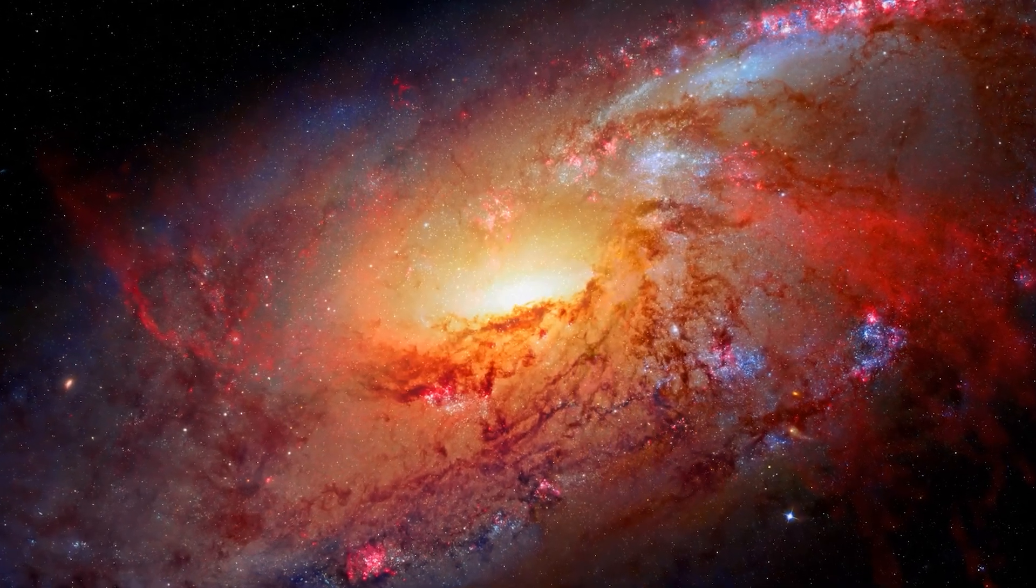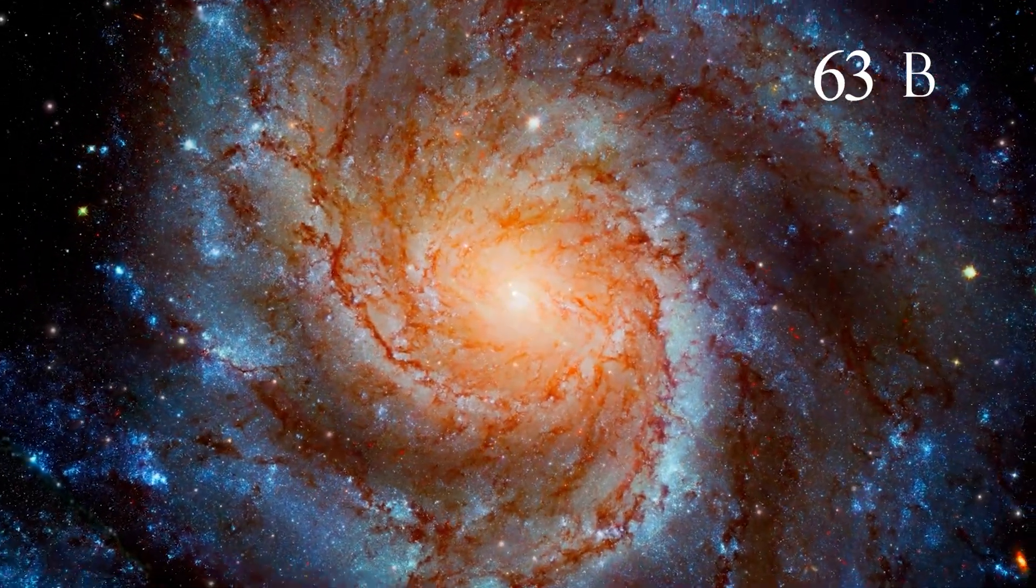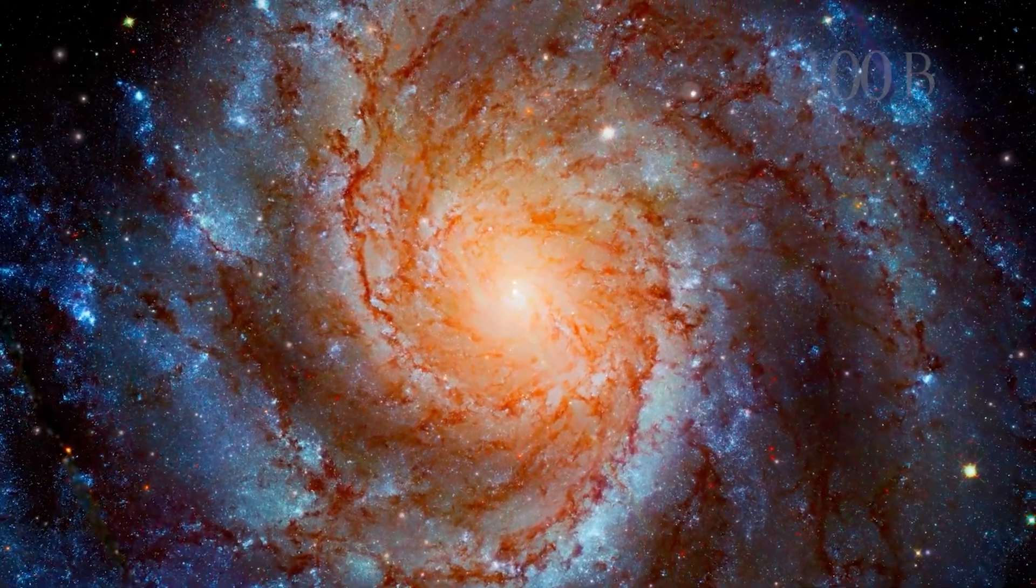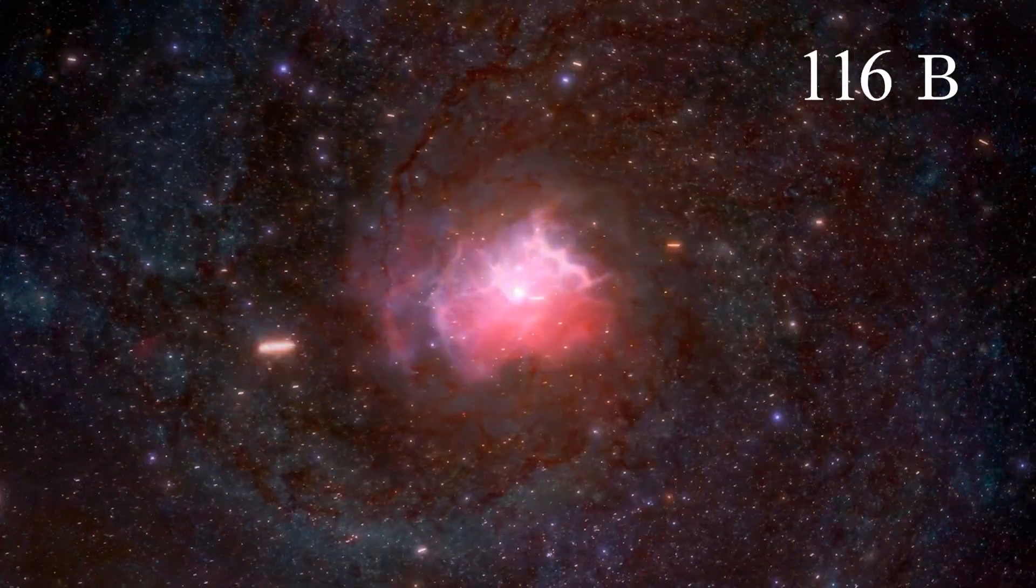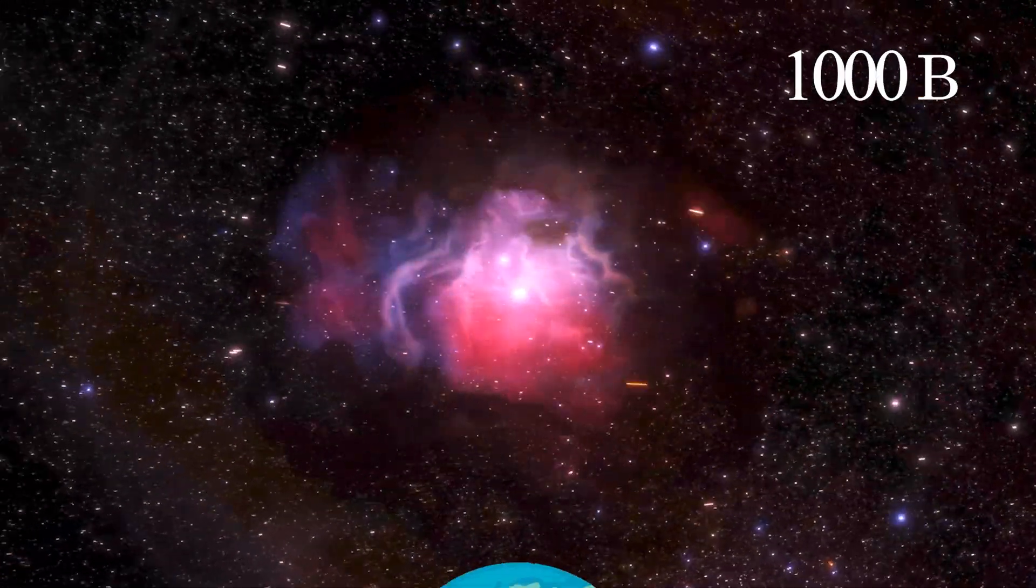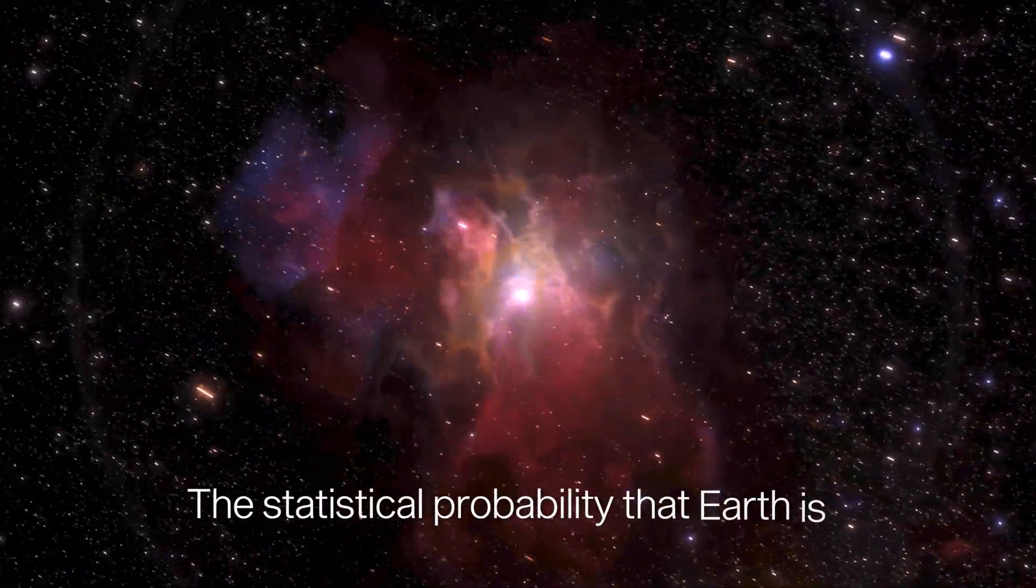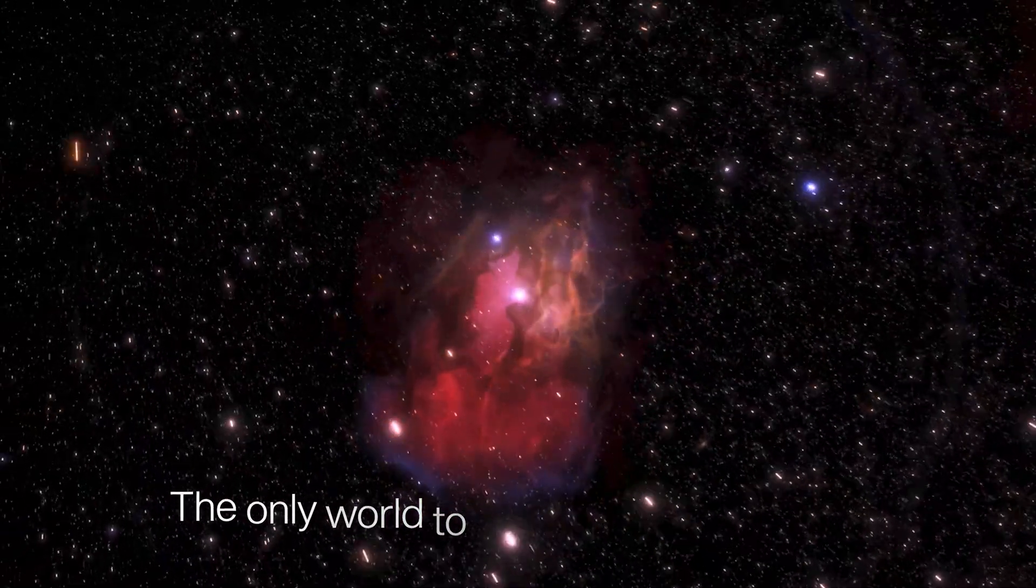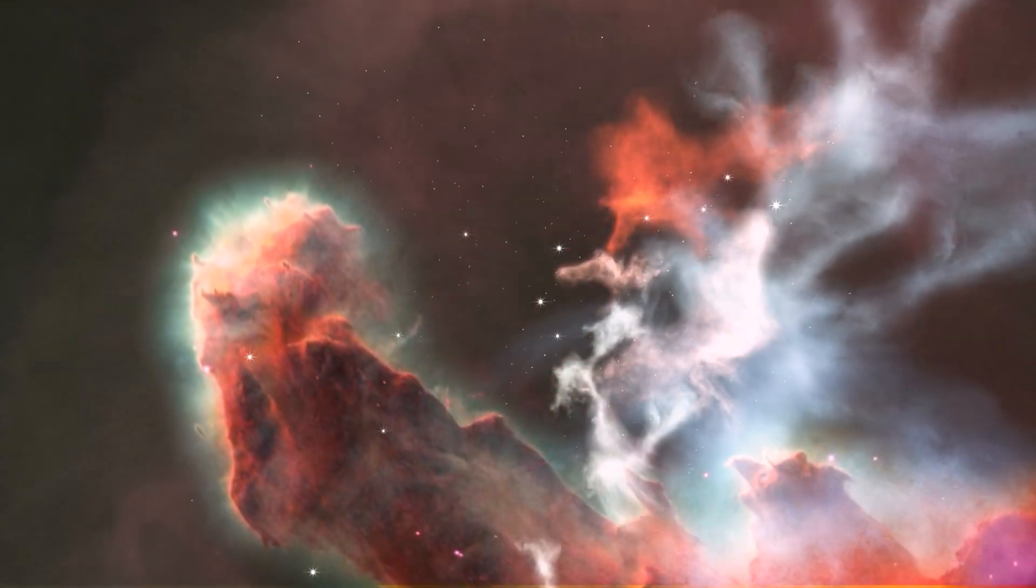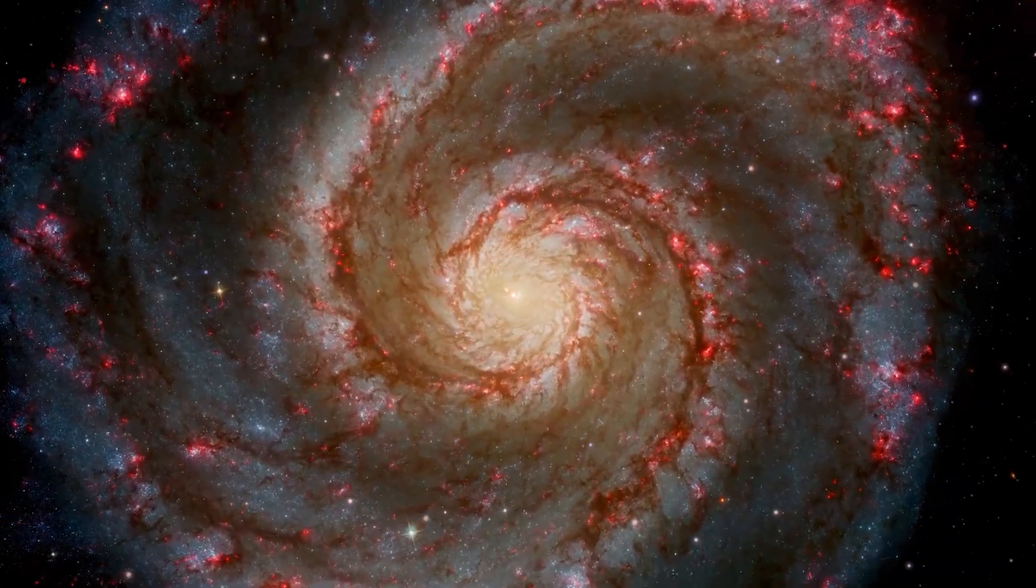When we expand this calculation to the observable universe containing approximately 100 billion galaxies, we arrive at numbers that defy human comprehension. We're looking at potentially 1,000 billion Earth-like planets scattered across the cosmos. The statistical probability that Earth is the only world to develop intelligent life becomes virtually impossible. Yet despite these overwhelming odds, we have detected no clear evidence of extraterrestrial intelligence.